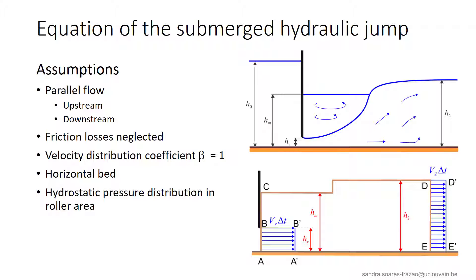Finally, we will assume small velocities in the roller in such a way that it can be considered as a body of water at rest, with a hydrostatic pressure distribution along BC here.